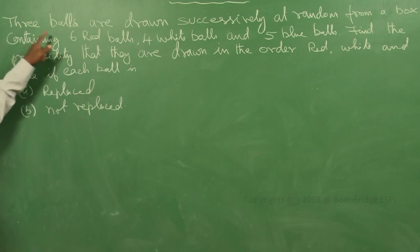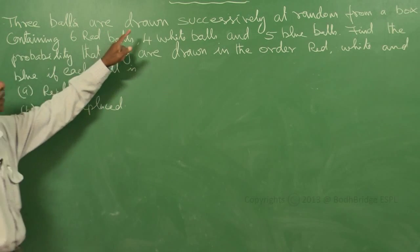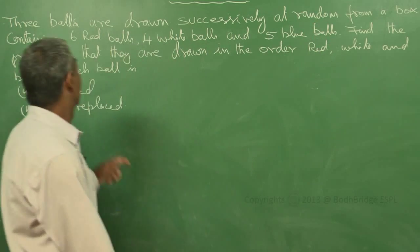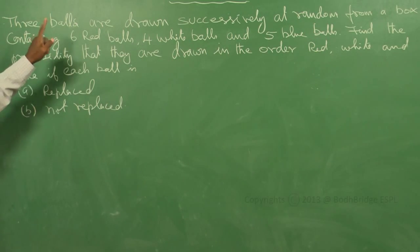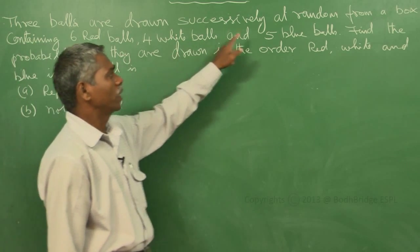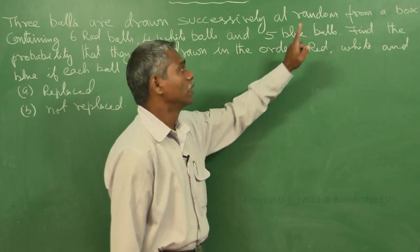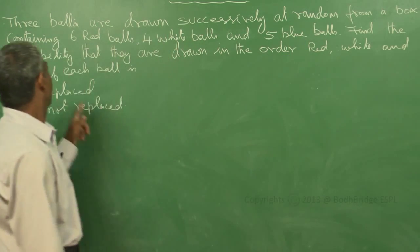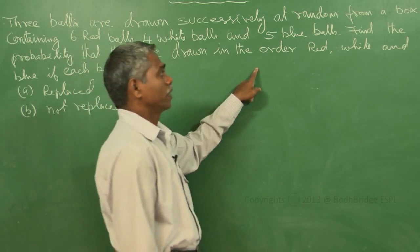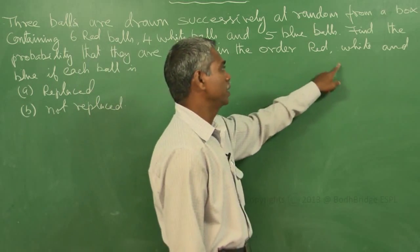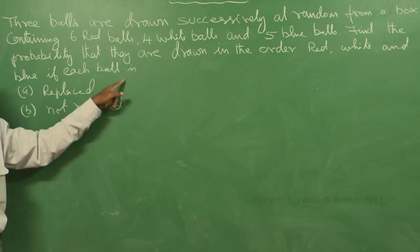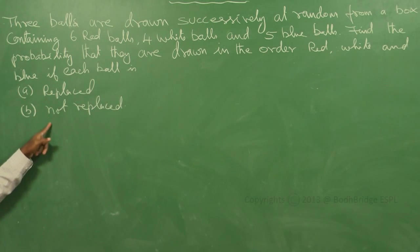3 balls are drawn successively at random from a box containing 6 red balls, 4 white balls and 5 blue balls. Find the probability that they are drawn in the order red, white and blue if each ball is replaced or not replaced.